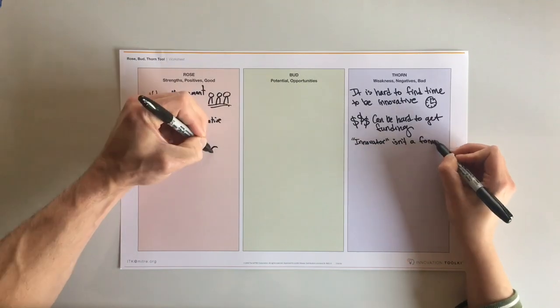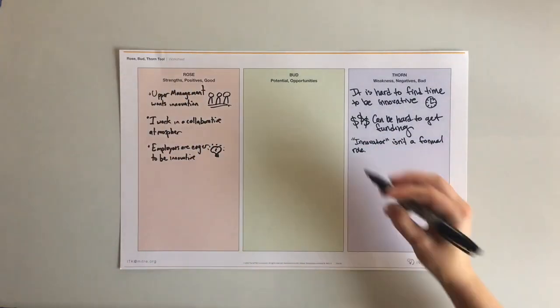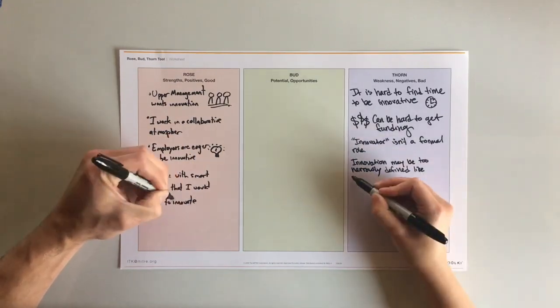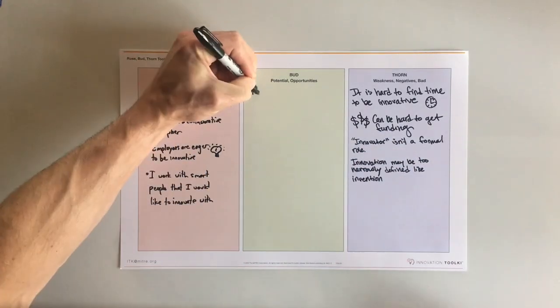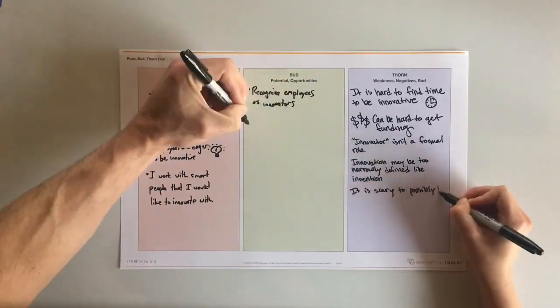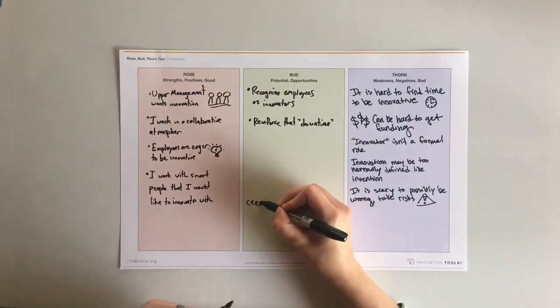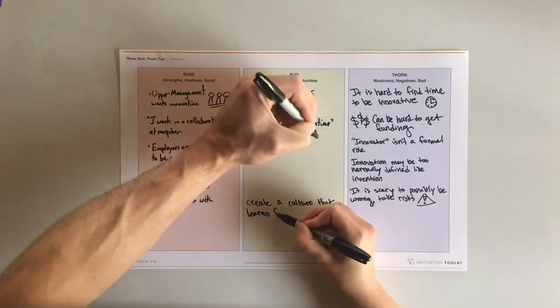First, identify the topic of analysis and pull together a diverse group of stakeholders, users, and subject matter experts. Next, select a format that best supports collaboration in your group. You can use the worksheet or create your own Rose Bud Thorn structure with a whiteboard, digital document, or sticky notes.